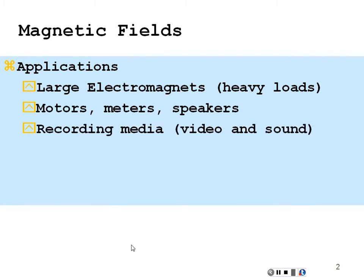For recording media, a magnetic field tip can orient the magnetic domains in a medium. When you return, those oriented domains can reproduce that information through another receiving magnetic tip. If you record digitally — either ones or zeros — you can record all sorts of video and sound in this manner.